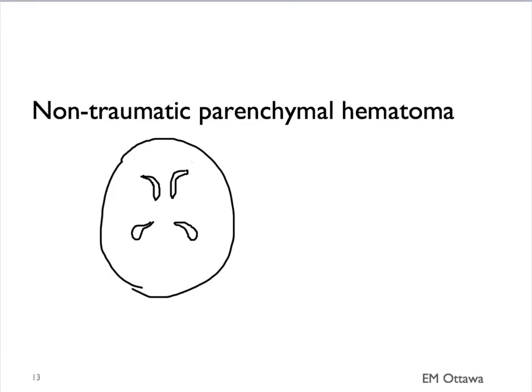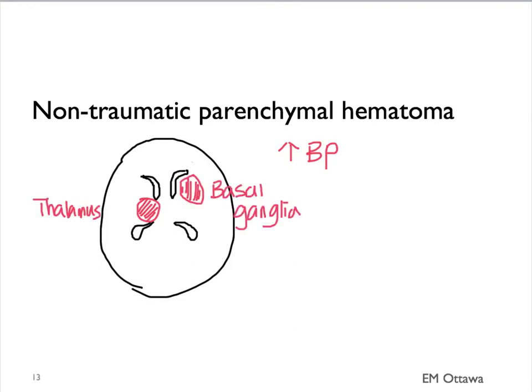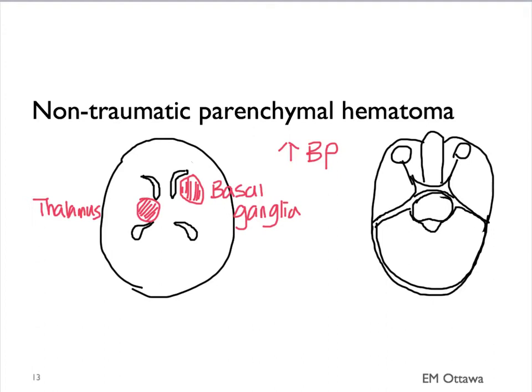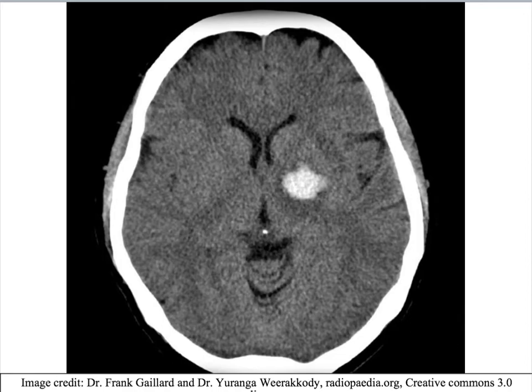For non-traumatic parenchymal hematoma, it is usually caused by hypertension. The bleeding tends to concentrate on a few areas: the thalamus, basal ganglia, the pons, and the cerebellum. Those tend to be the areas where the non-traumatic parenchymal hematoma occurs. On the CT head, it will look like this. As you can see, this parenchymal bleed is in the basal ganglia.